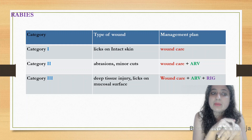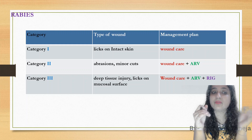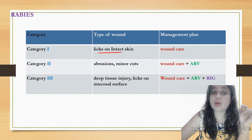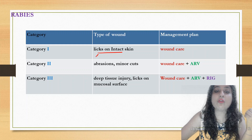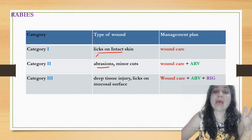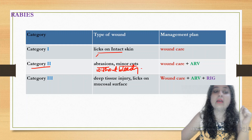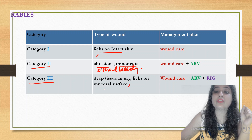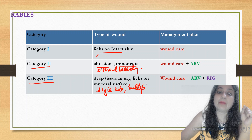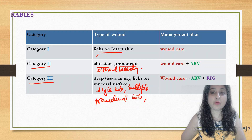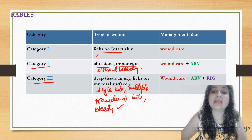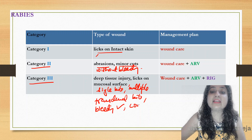First, a very important chart for rabies. Rabies has three categories: 1, 2, and 3. Category 1 is licks on intact skin — skin is not broken. Category 2 is abrasion or minor cuts without bleeding. Category 3 is deep tissue injury, single bite or multiple transdermal bites with bleeding present.